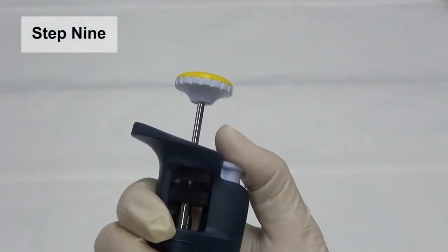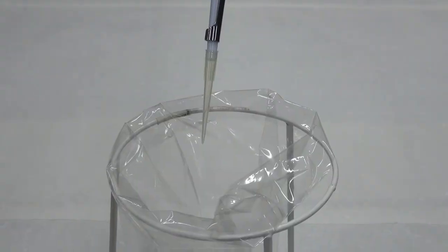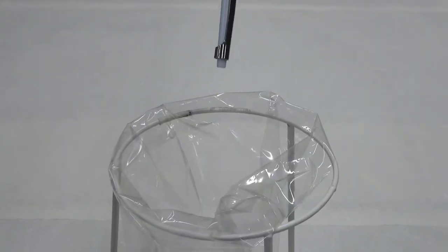Step 9. Press the tip ejector button while aiming at the trash bin for used tips to eject and discard the tip.